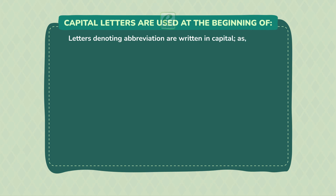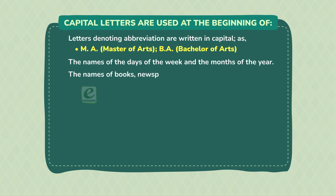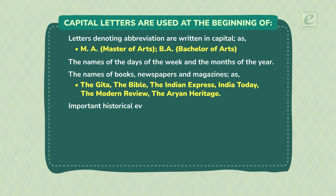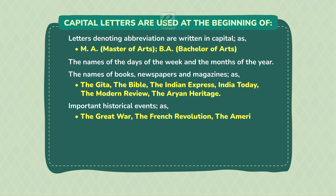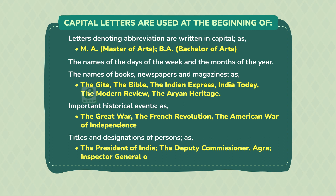Abbreviations are written in capitals, as: M.A. (Master of Arts), B.A. (Bachelor of Arts). The names of days of the week and the months of the year. The names of books, newspapers and magazines, as: The Gita, the Bible, the Indian Express, India Today, the Modern Review, the Aryan Heritage. Important historical events, as: The Great War, the French Revolution, the American War of Independence. Titles and designations of persons, as: The President of India, the Deputy Commissioner of Agra, Inspector General of Police, etc.